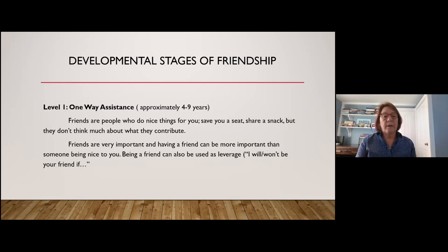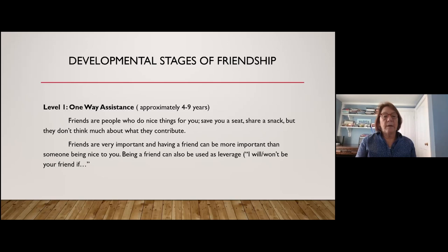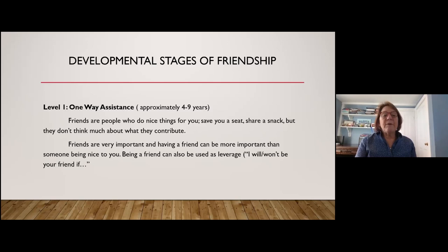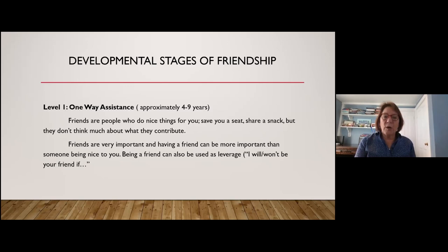The next level, approximately four to nine years, is one-way assistance. Friends are people who do nice things for you — they save you a seat, tell you you look nice. There's not much idea of a two-way street. Having a friend is more important than having a good friend. You may have seen this with your own children — 'Why is he so mean to you?' 'But he's my friend.' Friendship can be used as leverage: 'I will be your friend if you do that.'